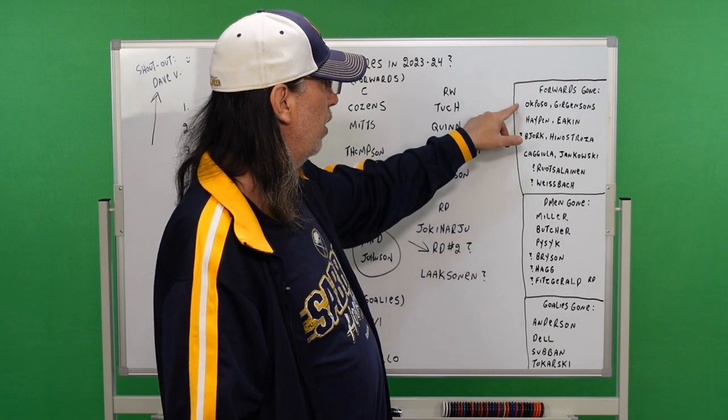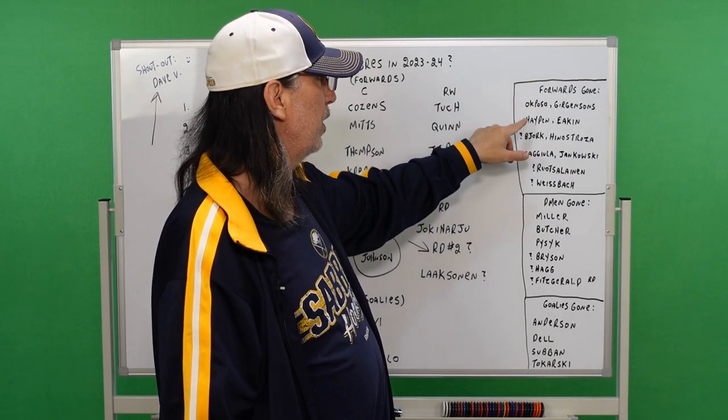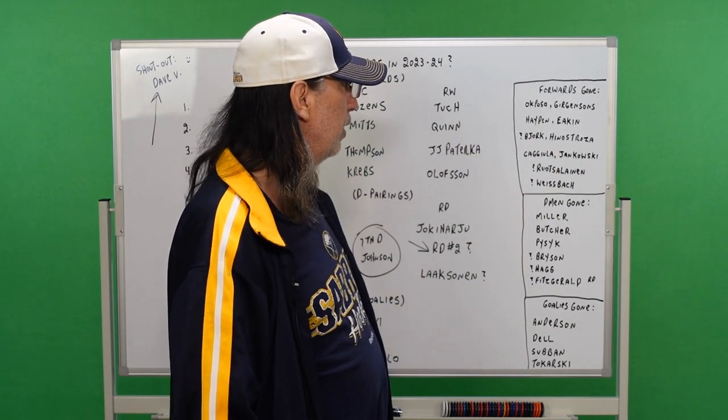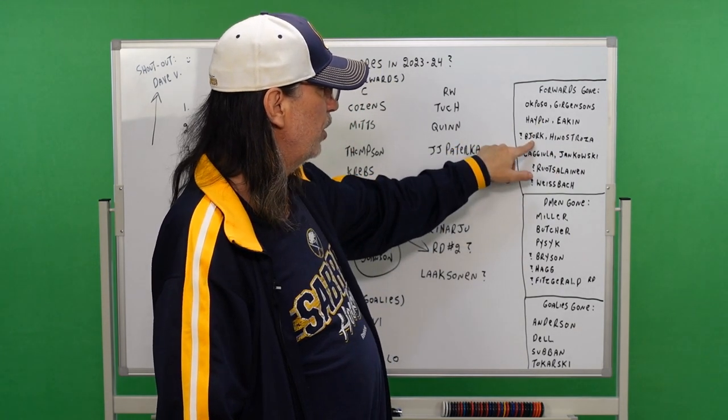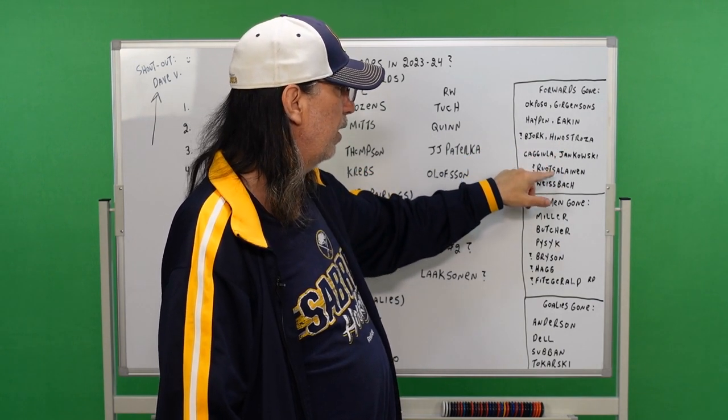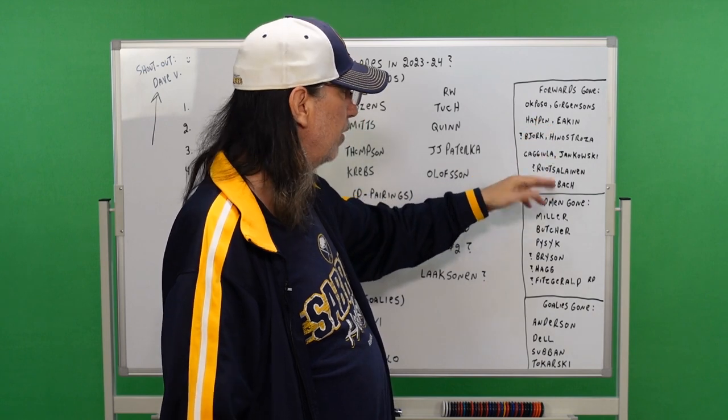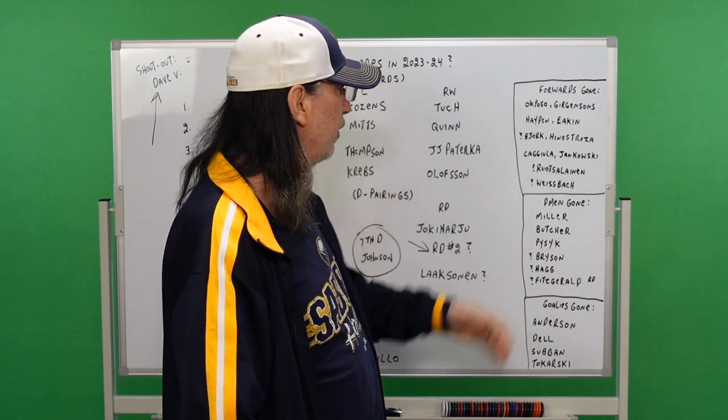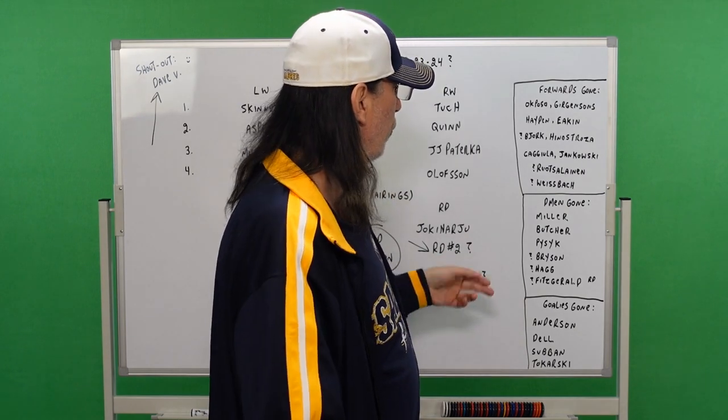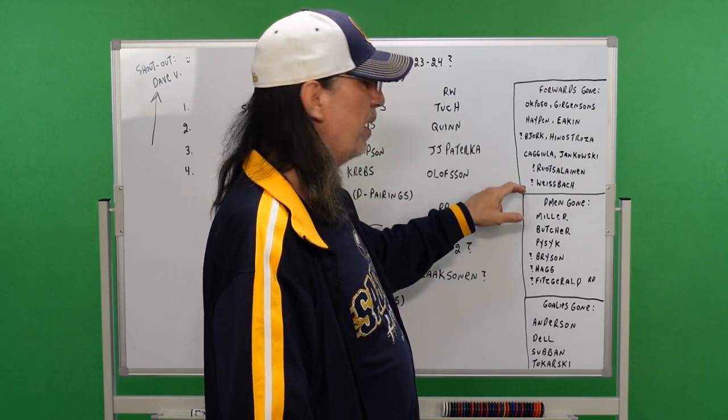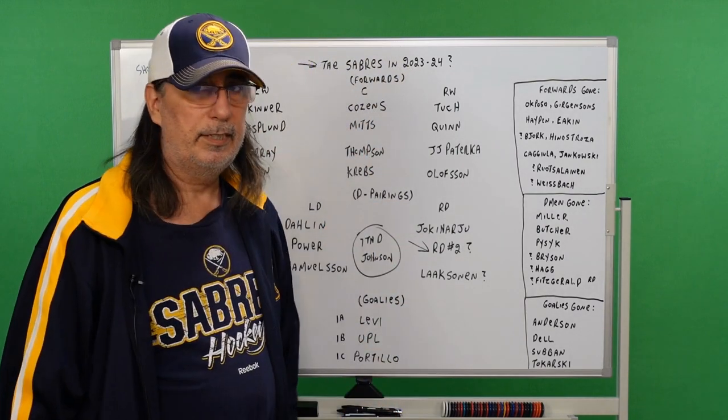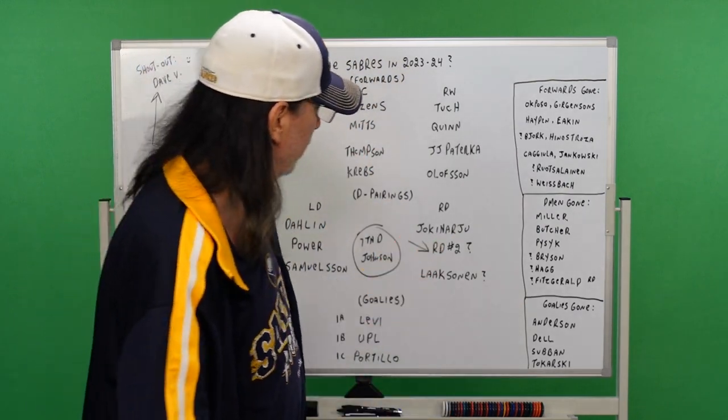Now forwards gone. Okposo will be gone, Girgensons will be gone. Hayden will be gone, Eakin will be gone. Bjork I put a question mark. Hinostroza I believe will be gone. Kulich will be gone. Jankowski will be gone I think. It's too soon to write him off. I get he's a first-rounder and everything, but it's just too soon. Rousek, question mark. Weissbach, question mark. If there's anybody I forgot, it's because I forgot. It's just no other reason.